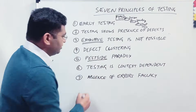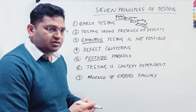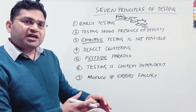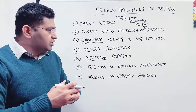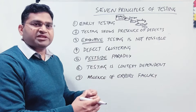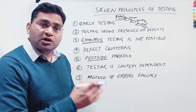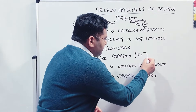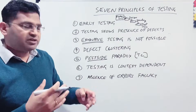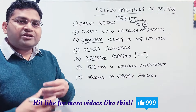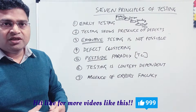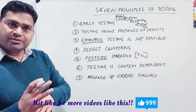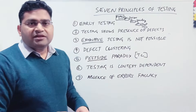The fifth principle is the pesticide paradox. In agriculture, when you use the same pesticide repeatedly on a crop, at some point it stops working because pests build immunity against it. The same applies to testing: if you run the same set of test cases for every version of the software again and again, those test cases won't find new defects. To find new defects, you need new sets of test cases. That's the pesticide paradox.